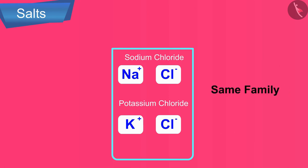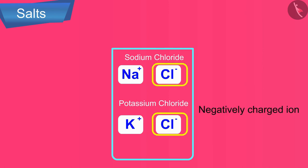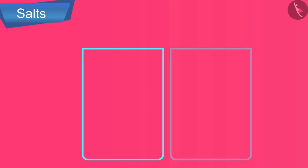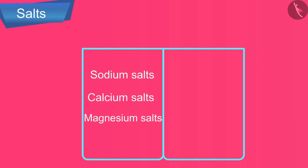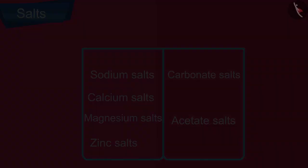Similarly, sodium chloride and potassium chloride belong to the same family because they have the same negatively charged ion, that is Cl- ions. Some of the important families of salt are sodium salts, calcium salts, magnesium salts, zinc salts, carbonate salts, and acetate salts.